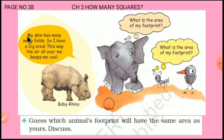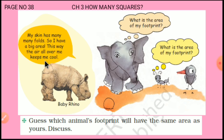Page number 38 — see this baby rhino. It says: my skin has many many folds, so I have a big area. This way, the air all over me keeps me cool. यानी folds की वजह से उसकी skin का area ज्यादा है, और ज्यादा area होने से ज्यादा air touch होती है, जिससे body ज्यादा cool रहती है।